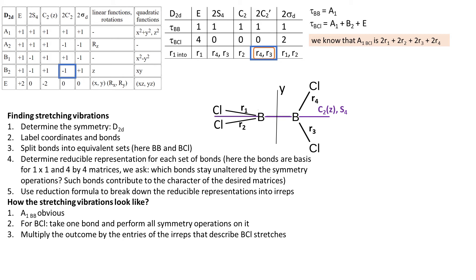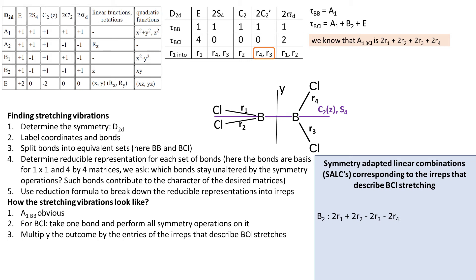Then R4 and R3 by minus 1 again, and R1, R2 by plus 1, and we get 2R1 plus 2R2 minus 2R3 minus 2R4.